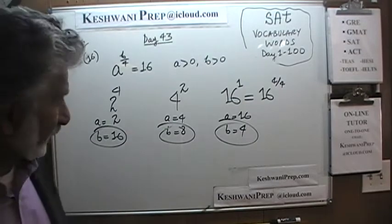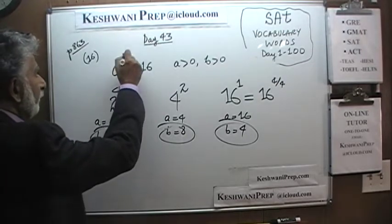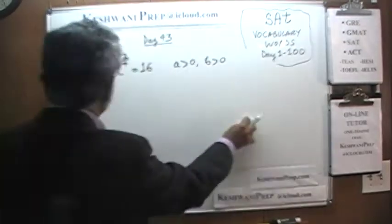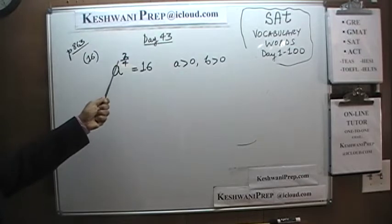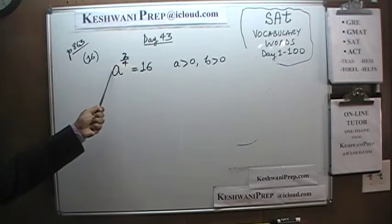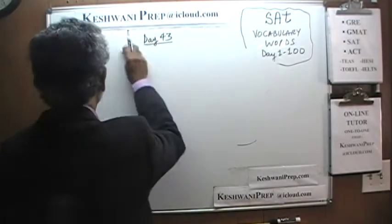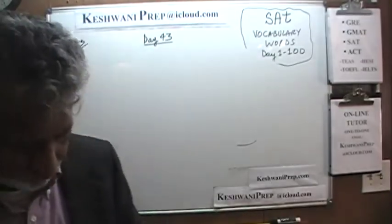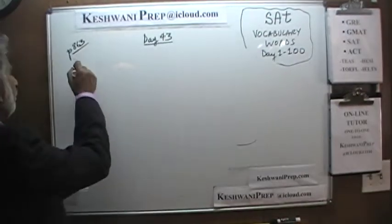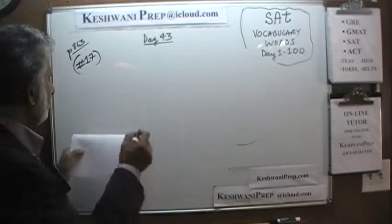There are two more possibilities. For example, b could be 2. If b is equal to 2, then 2 over 4 is one half, in which case a would be some number whose square root is 16 — a would be 256. And the third possibility is 256 times 256, and so on. Here we are not taking the exam, so we go into a little more detail because we are here for learning purposes.